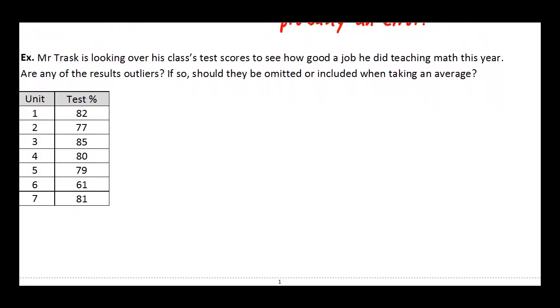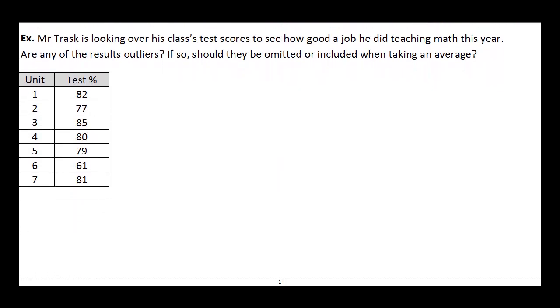All right, let's take a look at one last example. So, Mr. Trask is looking over class averages, test scores, to see if he did a good job teaching math this year. And the question is, are any of these results outliers? And if so, should he throw them out? Should he kind of ignore them, or are they important?